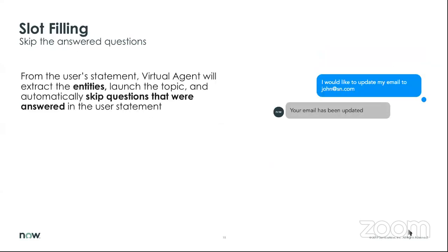We also have slot filling, where we skip answers already provided. For example, if I specify my emergency contact and a phone number with digits in my initial message, those slots are filled and the virtual agent will skip questions already answered. We don't want to extract what the employee typed in and then ask them questions about information we know they've already provided. In my mobile demo, it would have been a poor experience to ask 'do you want to update the phone number, and what is that number?' when I had already typed it in — we extracted it and skipped those details.